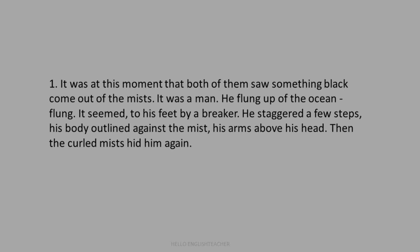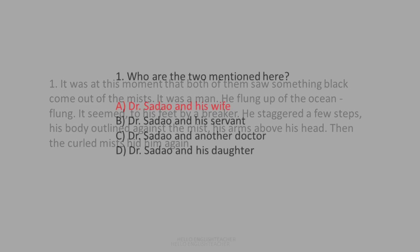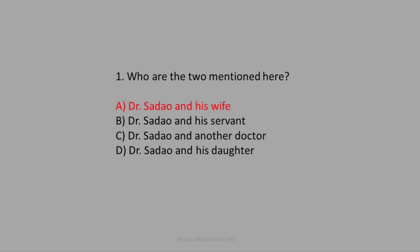Question 1: Who are the two mentioned here? The options are: Dr. Sadao and his wife; Dr. Sadao and his servant; Dr. Sadao and another doctor; Dr. Sadao and his daughter. The answer is Dr. Sadao and his wife.